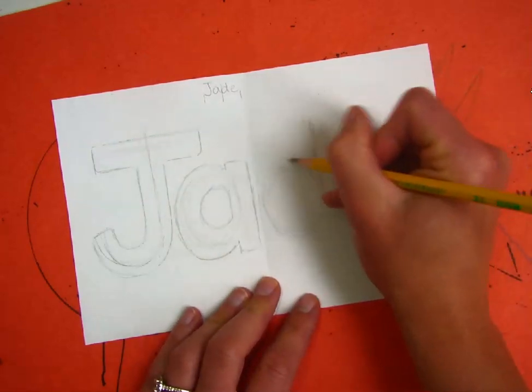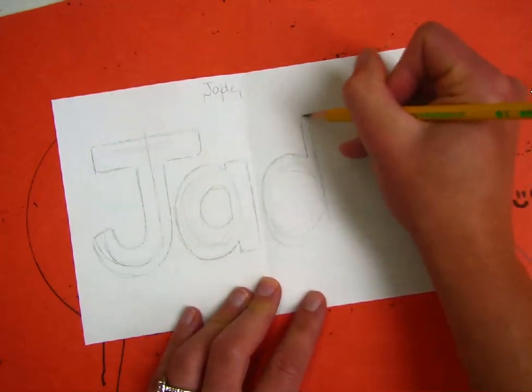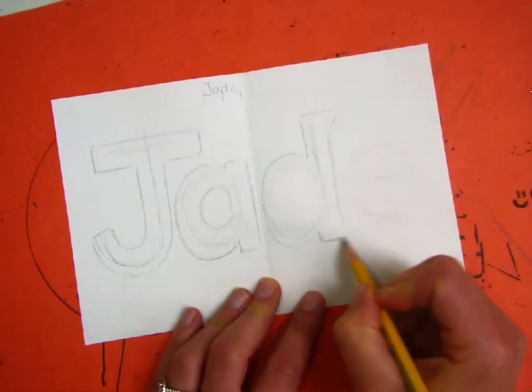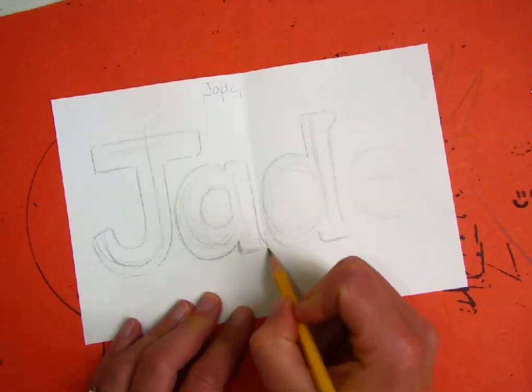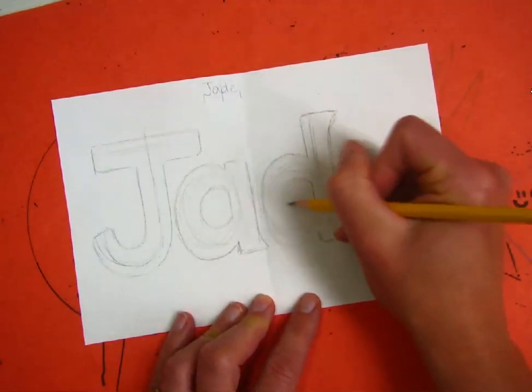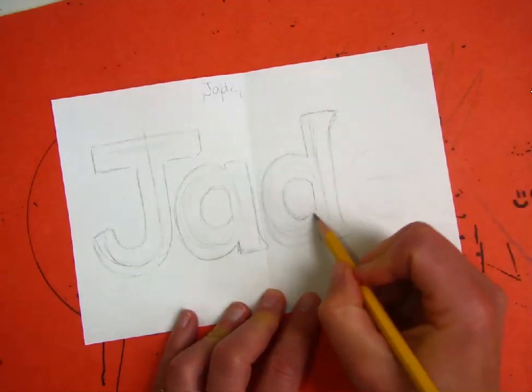Don't forget to also create a halo on the inside of the letters that have a closed area. Letters like A, D, and E have a closed area, so I will go around the outside but I will also have to go around the inside.